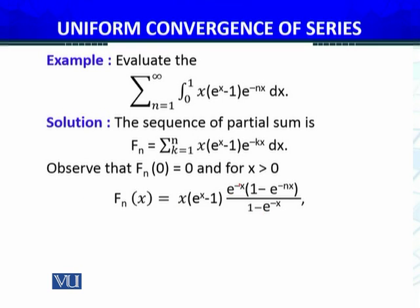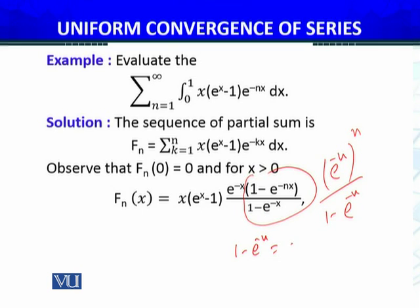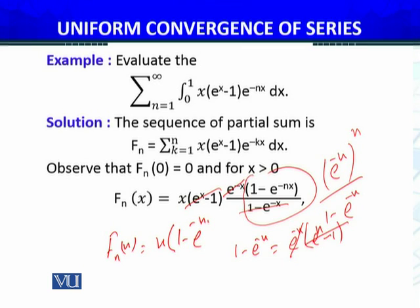So we had e^(-x) at the front, and the sum gives (1 - e^(-nx)) / (1 - e^(-x)). Now, 1 - e^(-x) can be written as e^(-x) · (e^x - 1), so the e^(-x) in the numerator and denominator cancel completely. Therefore f_n(x) = x · (1 - e^(-nx)).